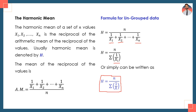To summarize: you take the reciprocals of the values, find their arithmetic mean, and then take the reciprocal again. So the harmonic mean of a set of n values is the reciprocal of the arithmetic mean of the reciprocals of the values.